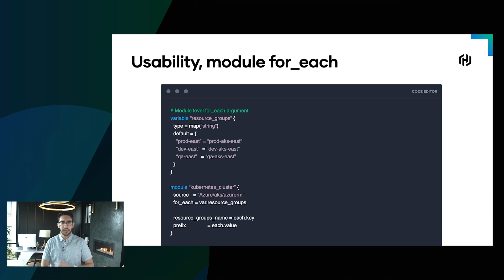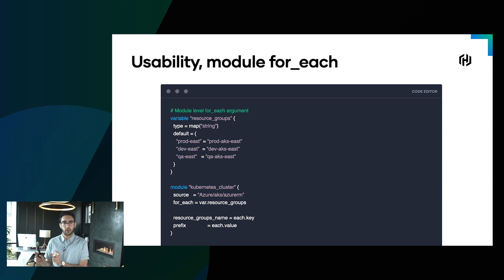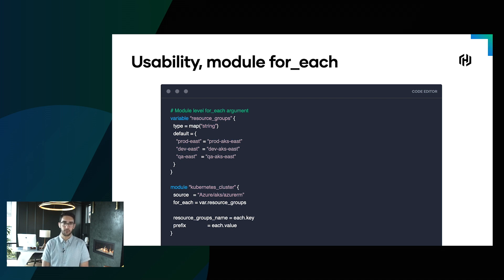So in this case, we might be setting up a set of resource groups in different regions, and so we can create a mapping that has the different key-value pairs of how we want to apply it, and then do a for_each over the module and deploy a Kubernetes cluster within each of those resource groups.